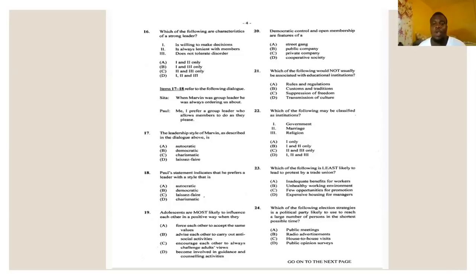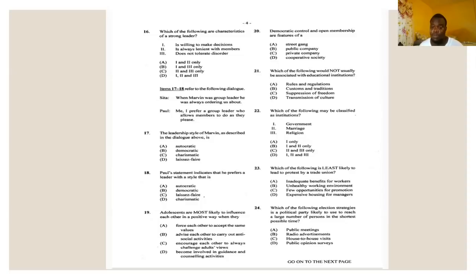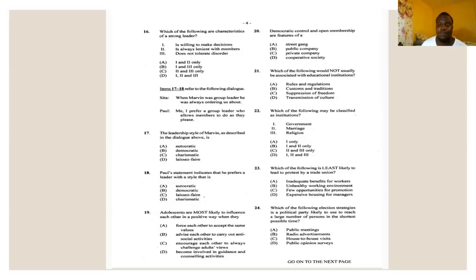Number twenty-four says: which of the following election strategies is a political party likely to use to reach a large number of persons in the shortest possible time? A: public meetings — reaches large groups but only at one location at a time. B: radio advertisements. C: house-to-house visits — won't reach large amounts. D: public opinion surveys — use a small sample. Radio advertisements, for example broadcasting on RJR across Jamaica, reach the largest number in the shortest time. The answer for number twenty-four is B.